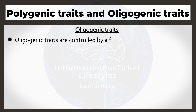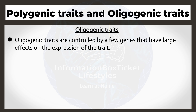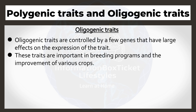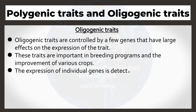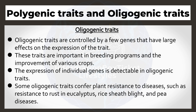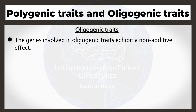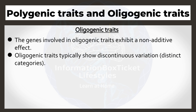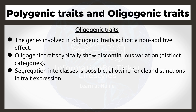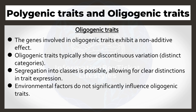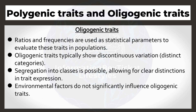Oligogenic traits are controlled by a few genes that have large effects on the expression of the trait. These traits are important in breeding programs and the improvement of various crops. The expression of individual genes is detectable in oligogenic traits. Some oligogenic traits confer plant resistance to diseases, such as resistance to rust in eucalyptus, rice sheath blight, and pea diseases. The genes involved in oligogenic traits exhibit a non-additive effect. Oligogenic traits typically show discontinuous variation in distinct categories. Segregation into classes is possible, allowing for clear distinctions in trait expression. Environmental factors do not significantly influence oligogenic traits. Latials and frequencies are used as statistical parameters to evaluate these traits in populations.